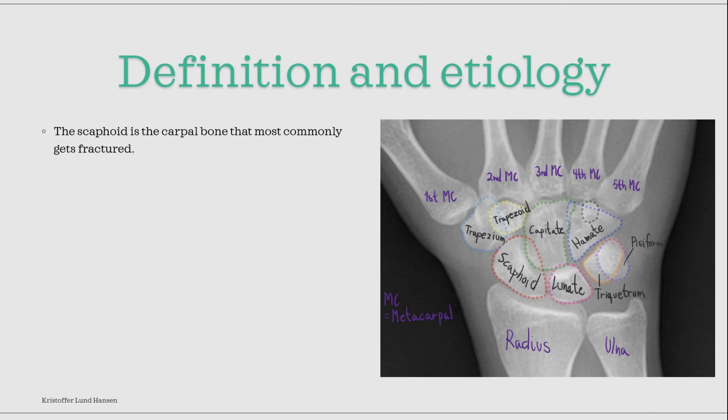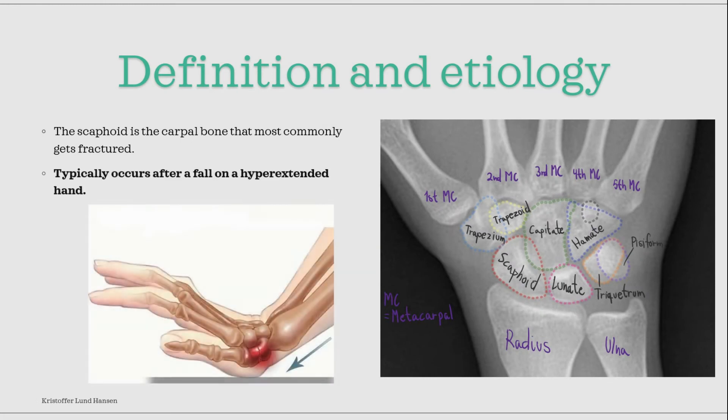The scaphoid is the carpal bone that most commonly gets fractured. Typically, these fractures occur when someone falls and takes the fall with their hand. Especially if the hand is hyperextended, the scaphoid gets a lot of energy from the fall, and this leads to a fracture.